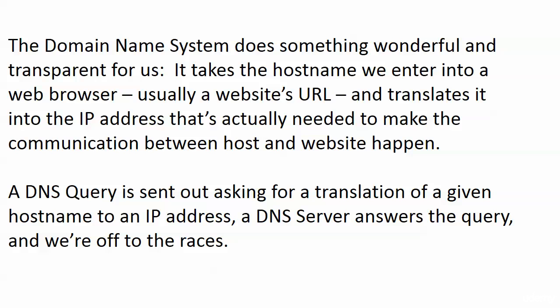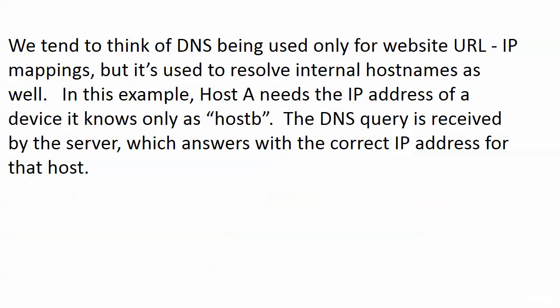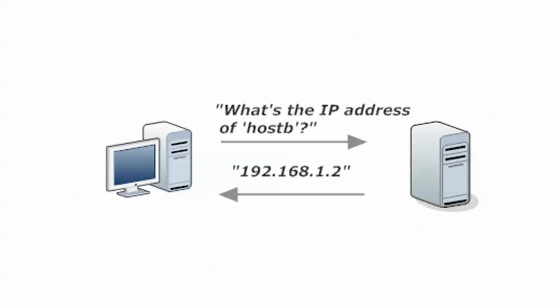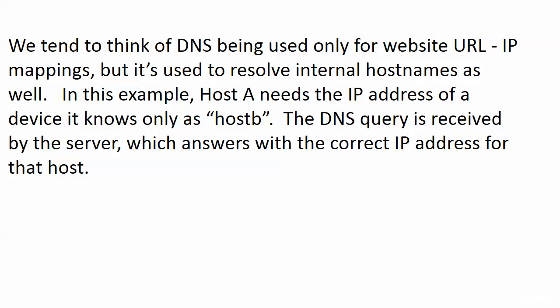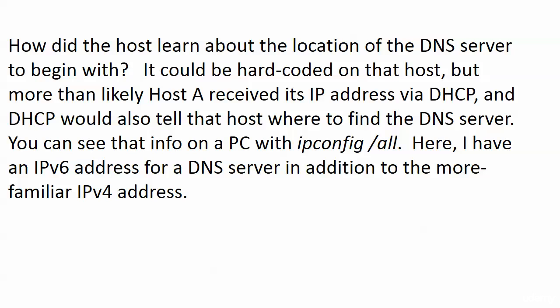ARP and DHCP are the same way, but for our exams we need to know a little bit about the details of each — and that's what this section is all about. You also use DNS to resolve internal host names. If we have a host that needs the IP address of a device it knows only as host B, it's going to send a query out to a DNS server, and the server can respond and say the address you actually want is 192.168.1.2. The question is how did the host learn the location of the DNS server to begin with? More than likely, the host received its IP address via DHCP, and DHCP would also tell the host where to find the DNS server.